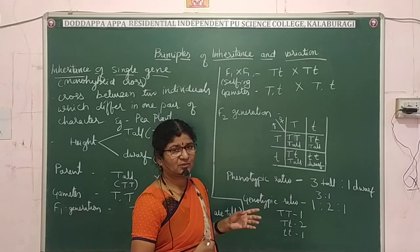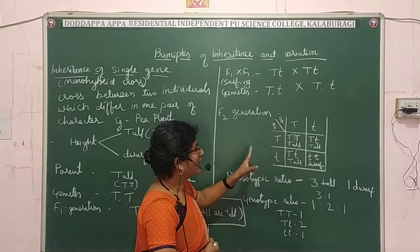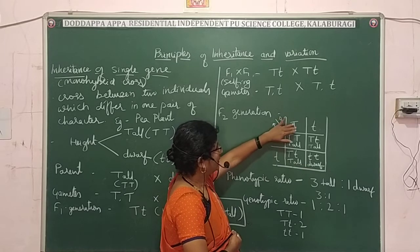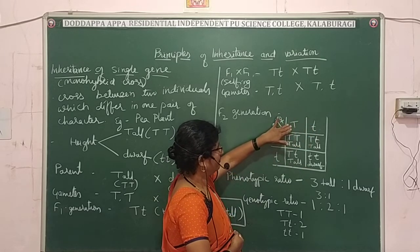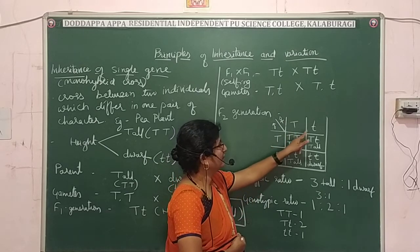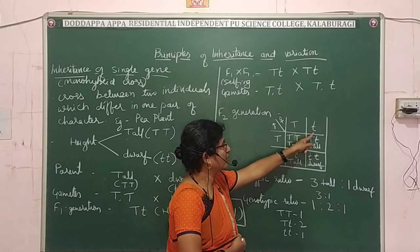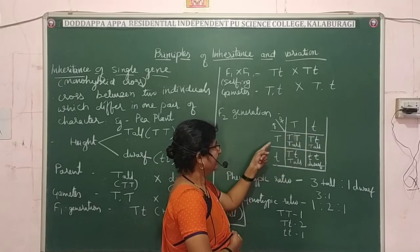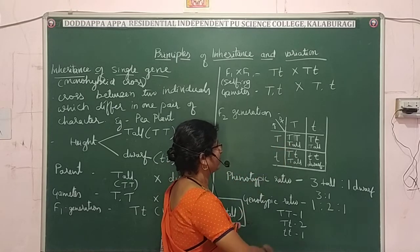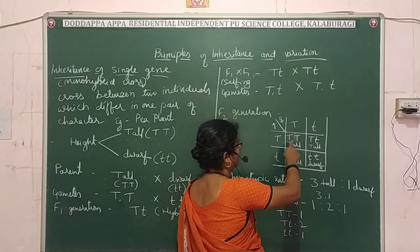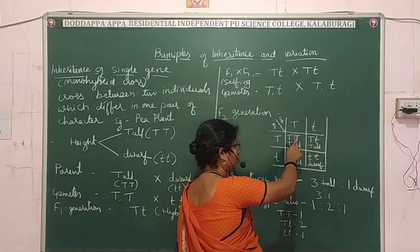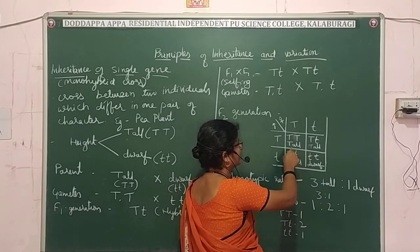We can show the progenies using the Punnett square (chakraboard). Draw rows and columns according to the number of gametes, placing female gametes on one axis and male gametes on the other. Write the gametes: capital T and small t. When you cross capital T with capital T you get TT — a homozygous condition. Since both genes are dominant, this individual expresses the tall character.